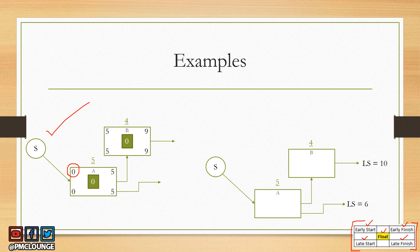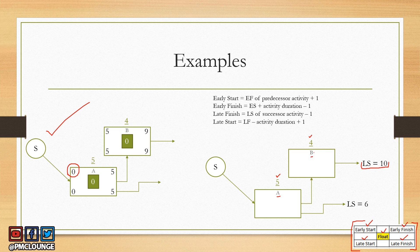The second method is where we start on day one and not on day zero. In this example, we have two activities — activity A and activity B — with durations of four and five respectively. We will also use a given late start value for the successor activity of activity B for calculation purposes. These are the formulas you need to use when you begin on day one, and we will keep these formulas in mind as we solve for early start, late start, early finish, and late finish.